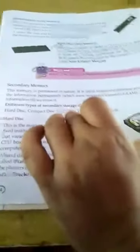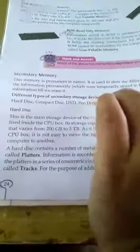Different types of secondary storage devices are: Hard disk, compact disk, DVD, pen drive, blu-ray disk, etc.